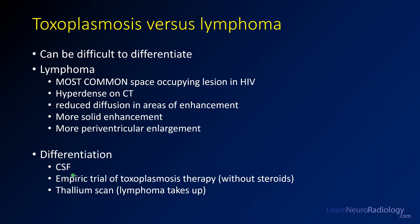CSF collection can be used to look for lymphoma cells. Often the easiest approach is to try the patient on toxoplasmosis therapy without steroids for a week or two and see if they improve — lymphoma will tend to be worse or stay the same. You can't give steroids because both toxoplasmosis and lymphoma respond to them. Thallium scan is a nuclear medicine scan in which lymphoma takes up thallium whereas toxoplasmosis does not, though it can have indeterminate findings and tends to be a test of last resort.